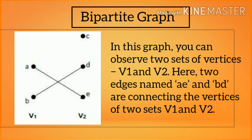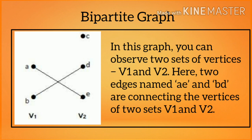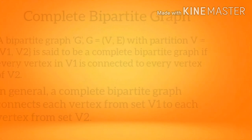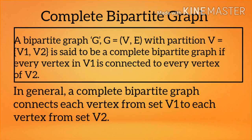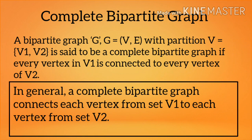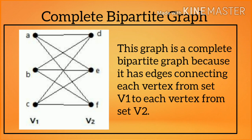Bipartite graph: in this graph you can observe two sets of vertices V1 and V2, where edges connect vertices between the two sets. Complete bipartite graph: a bipartite graph G = (V, E) with partition V = (V1, V2) is said to be a complete bipartite graph if every vertex in V1 is connected to every vertex of V2. This graph is a complete bipartite graph because it has edges connecting each vertex from set V1 to each vertex from set V2.